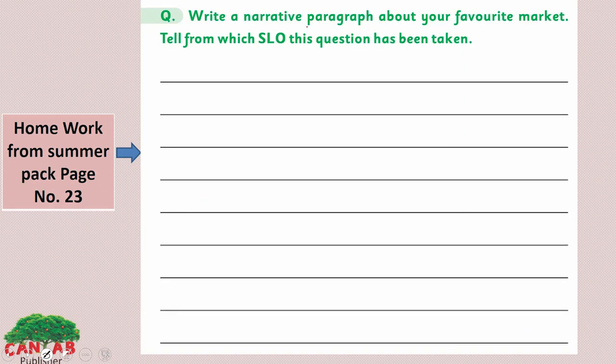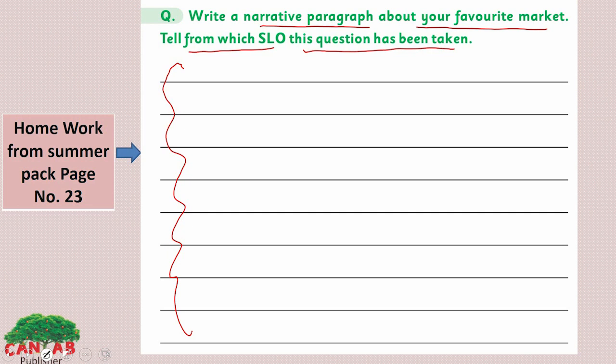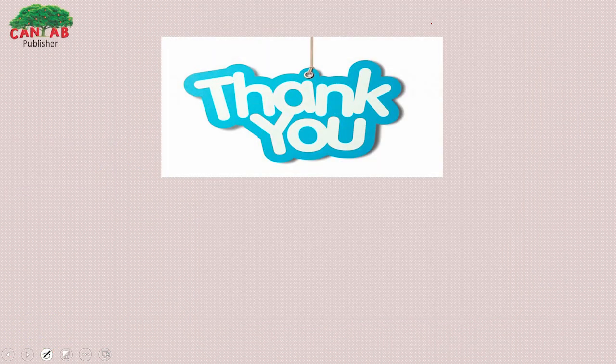From Summer Pack page number 23: write a narrative paragraph about your favorite market. Narrative means writing in a story style. Write five or six lines about your favorite market — it can be any market. I hope you can do this very easily. I hope you enjoyed my lesson. Thank you.